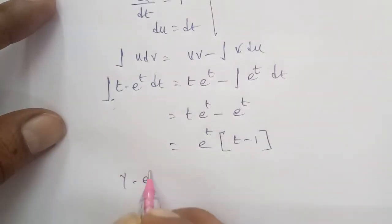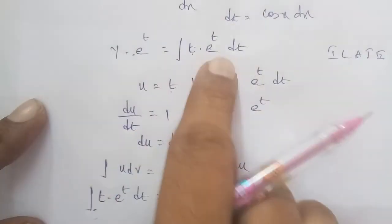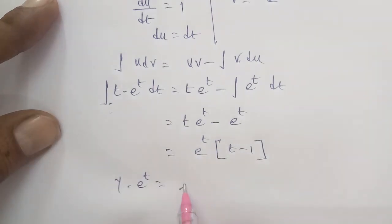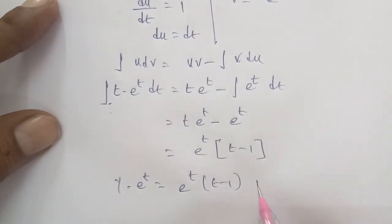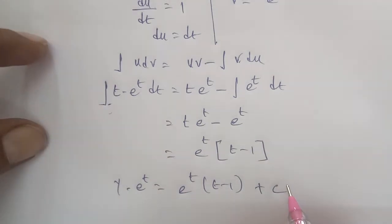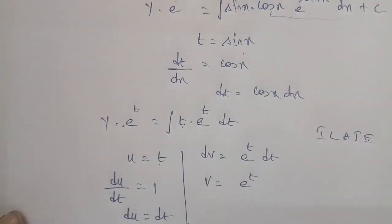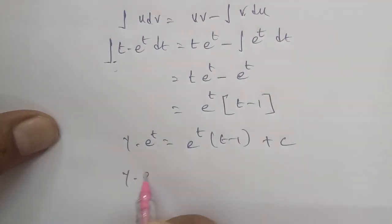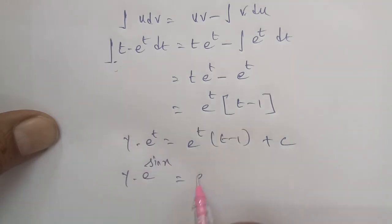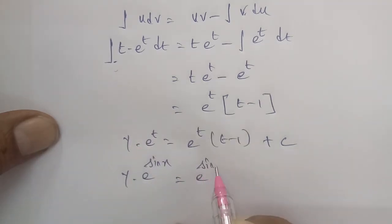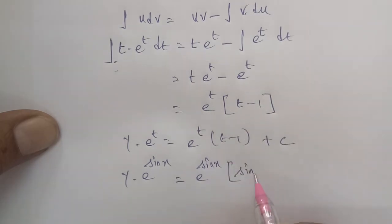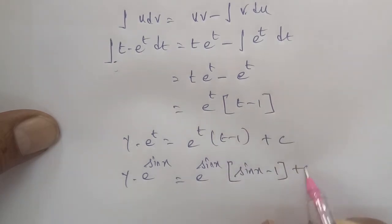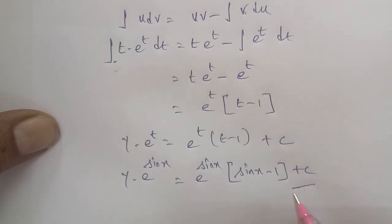So y into e power of t equals e power of t into (t minus 1) plus C. Now substituting back t equal to sin x, we get: y into e power of sin x equals e power of sin x into (sin x minus 1) plus C. Thank you.